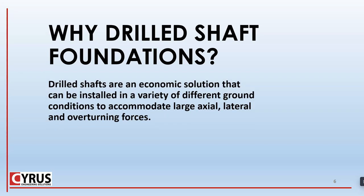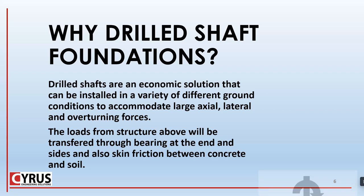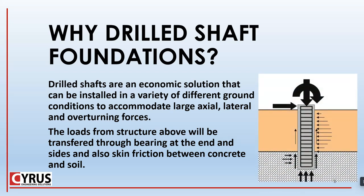Drilled shafts are an economic solution compared to other types of footings. They can be installed in a variety of different ground conditions to accommodate large axial, lateral, and overturning forces. The loads from the structure above will be transferred through bearing at the end and sides, and also skin friction between the concrete and soil — as shown in the diagram: bearing at the end, skin friction, and bearing on the side.